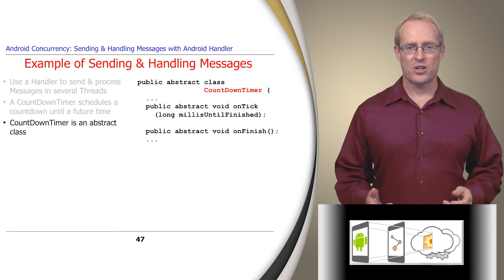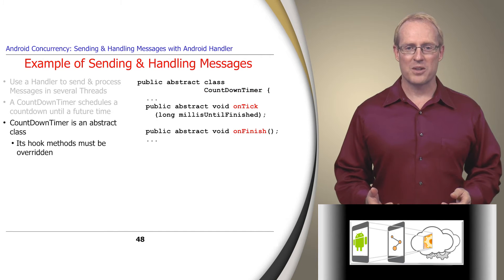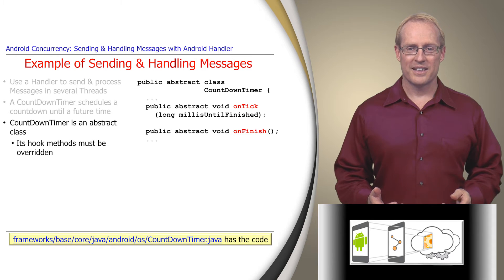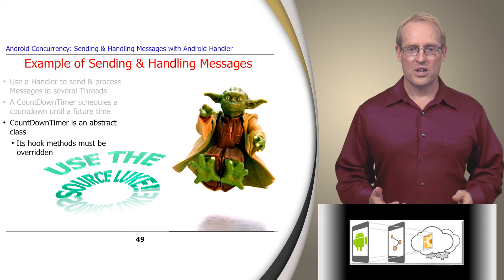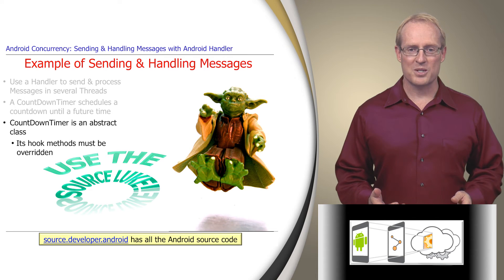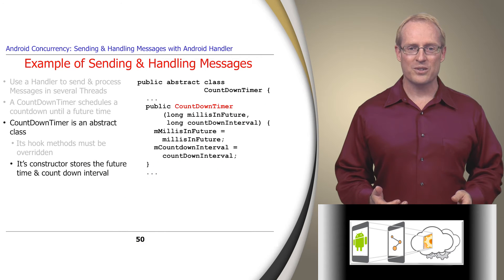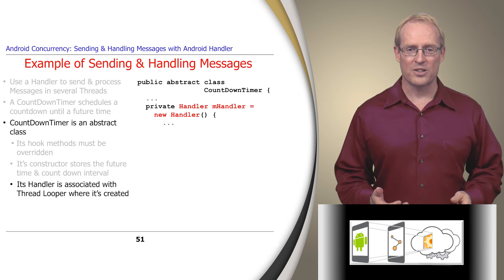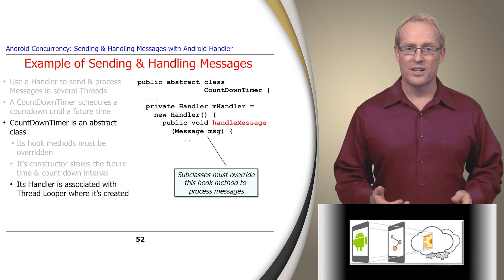CountdownTimer is an abstract class whose onTick and onFinish hook methods must be overridden, as shown at this path name. CountdownTimer's constructor stores the future time and countdown intervals in its data members. It also contains an internal handler associated with the thread's looper. This handler must override the handleMessage hook method to process messages passed to sendMessage.